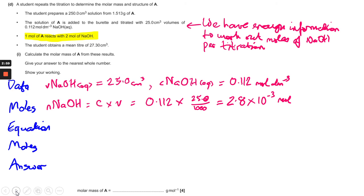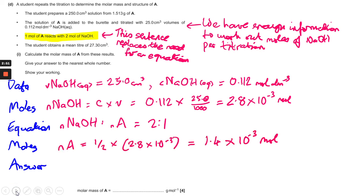Now it says one mole of A reacts with two moles of NaOH. This means we don't need an equation to work out mole ratio because the sentence actually tells us what it is. So therefore the number of moles of A is going to be half the number of moles of sodium hydroxide, so that's easy enough - you just divide 2.8 times 10 to the minus 3 by 2 and that gives you 1.4 times 10 to the minus 3.